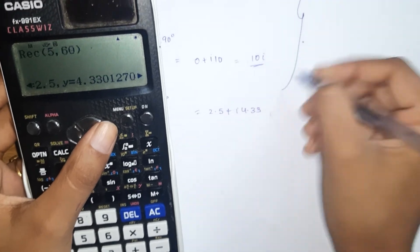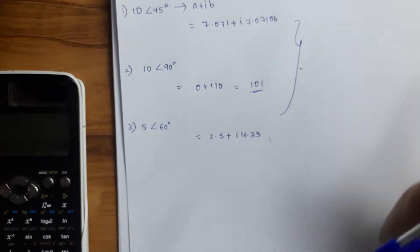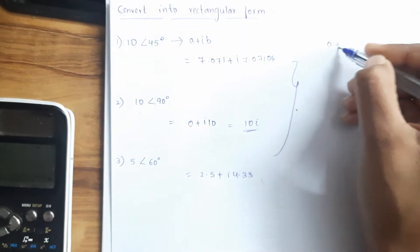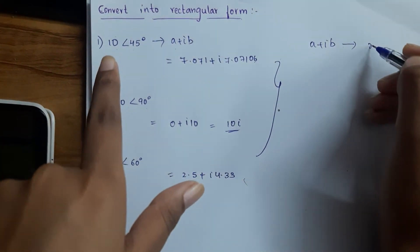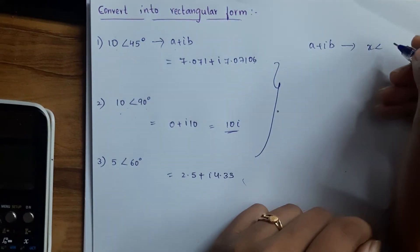And next, in the upcoming video we will see how to convert the given a plus ib form into polar form, like r angle alpha. This is some value and this is our angle. This will be in degrees.